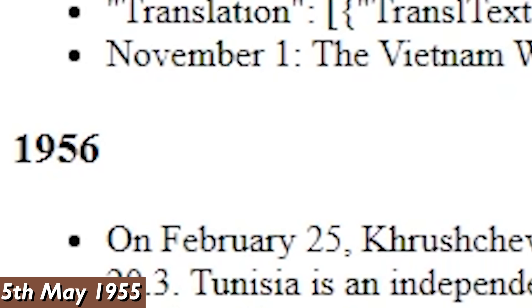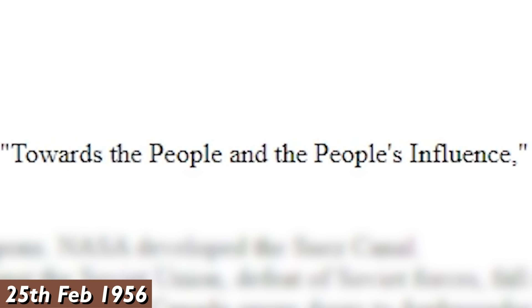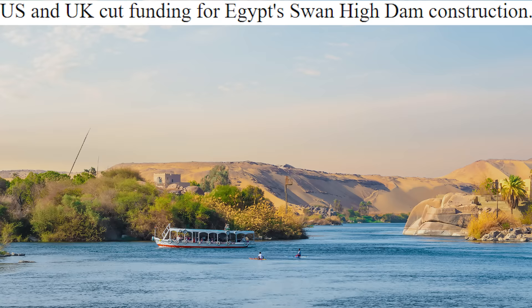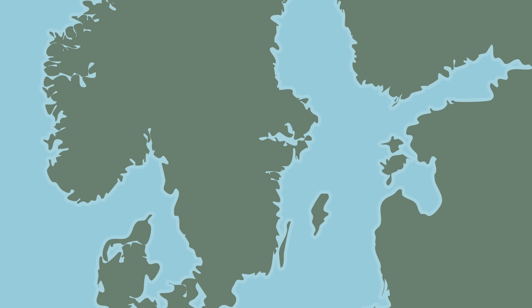May 5th, army invades West Germany — it doesn't say which one though. On 1956, Khrushchev delivers a speech at the 20th Congress of the Communist Party of China. He says, towards the people and the people's influence, which focused on the beginning of Stalinism. US and UK cut funding for Egypt's Swan High Dam construction because the rebels bought weapons. NASA developed the Suez Canal. The 29th of October, crisis in Sweden.